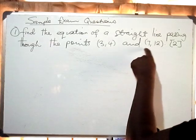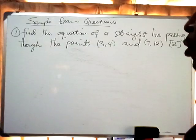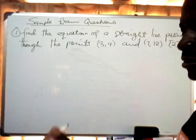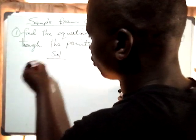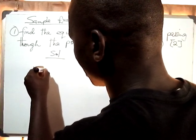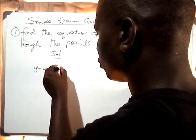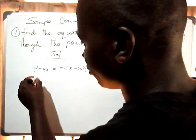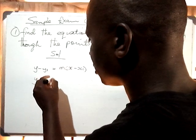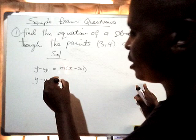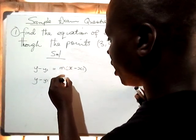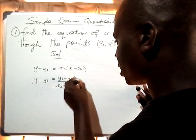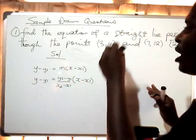How do we find the equation of a straight line if we have been given two points? We go to our solution and say y minus y1 is equal to the gradient multiplied by x minus x1. Then we say y minus y1 is equal to — how do we find the gradient? The gradient is found by saying y2 minus y1 over x2 minus x1, then open bracket x minus x1.